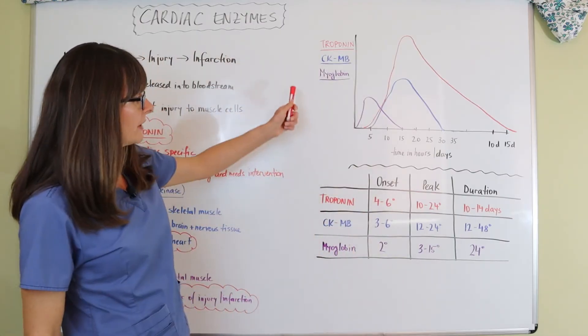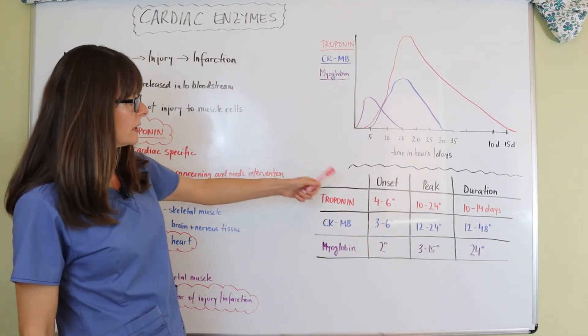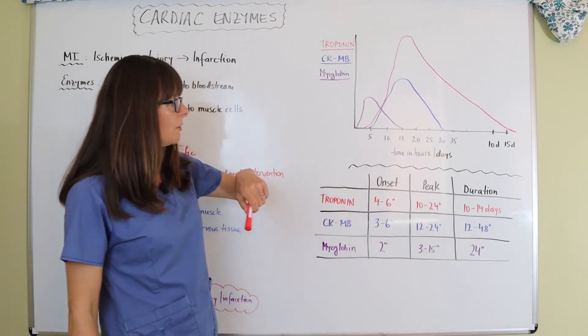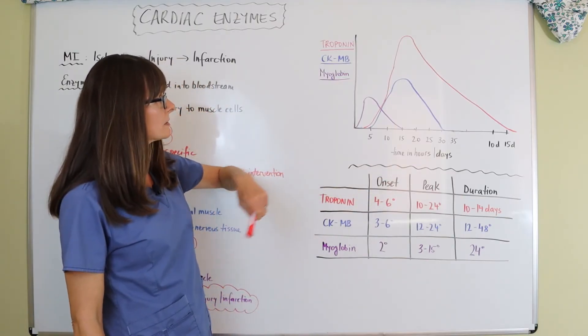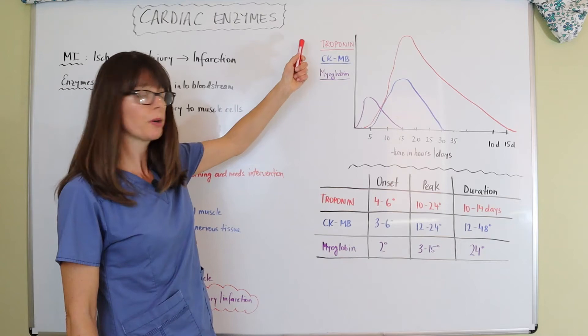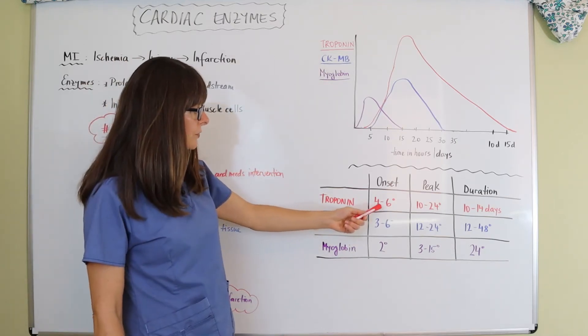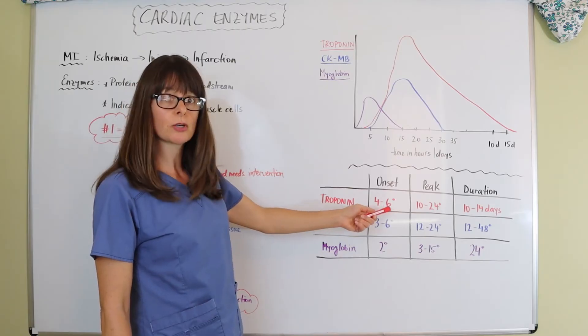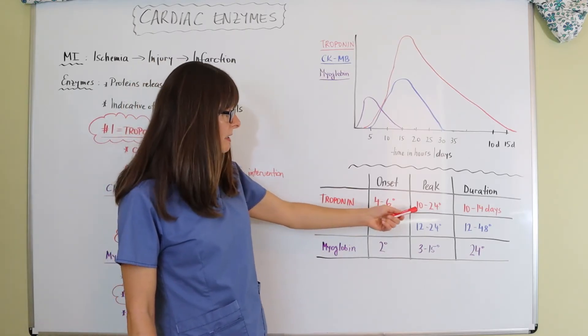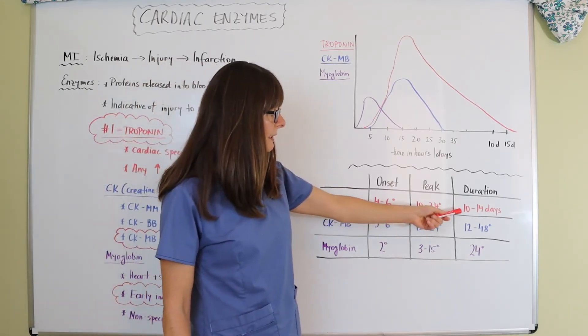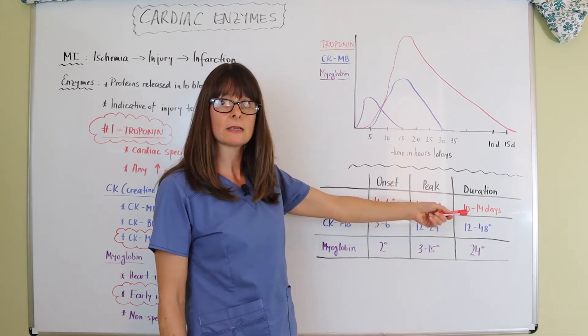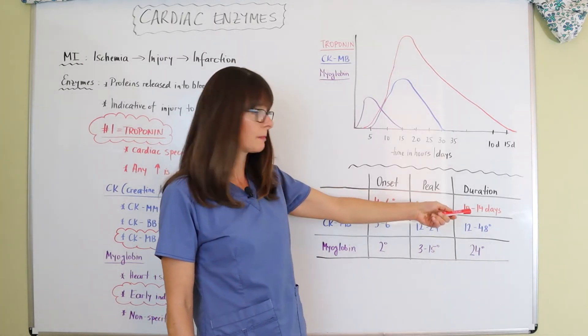And over here we have a graph and then a table as to the onset peak and duration for the different cardiac markers. So the most important one, troponin here in red again, gets elevated after four to six hours of injury to that cardiac muscle. The peak is at 10 to 24 hours, but it lasts 10 to 14 days. So that can be elevated quite some time.